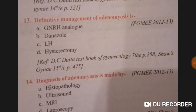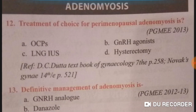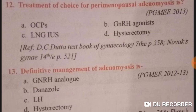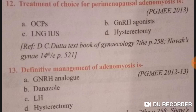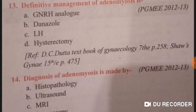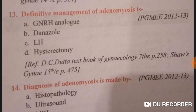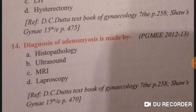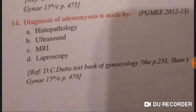Now we discuss adenomyosis. The treatment of choice for premenopausal adenomyosis is hysterectomy — option D is right. The definitive management of adenomyosis is also hysterectomy — option D is right. Diagnosis of adenomyosis can be made by ultrasound.